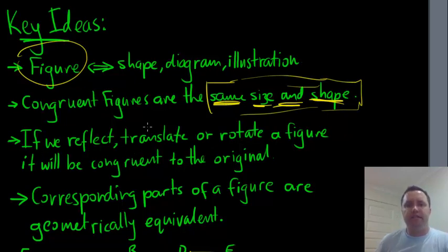So if we reflect, translate, or rotate, which are the three transformations that I just showed you, a figure, it will be congruent to the original. So if we do one of these three things, one, reflect, two, translate, or three, rotate it, it will be congruent still to its original.